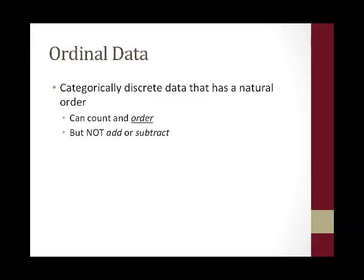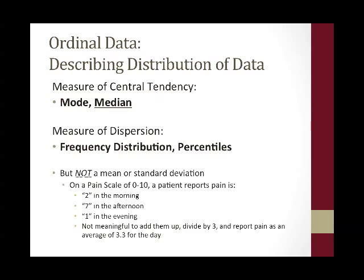Ordinal data is categorically discrete data that has a natural order. You can count and order this type of data. But like nominal data, you cannot add or subtract ordinal data. You do add another layer — another measure of central tendency — in that you can report a median with ordinal data, which will often help illustrate what you found in your study. You can also report a mode.